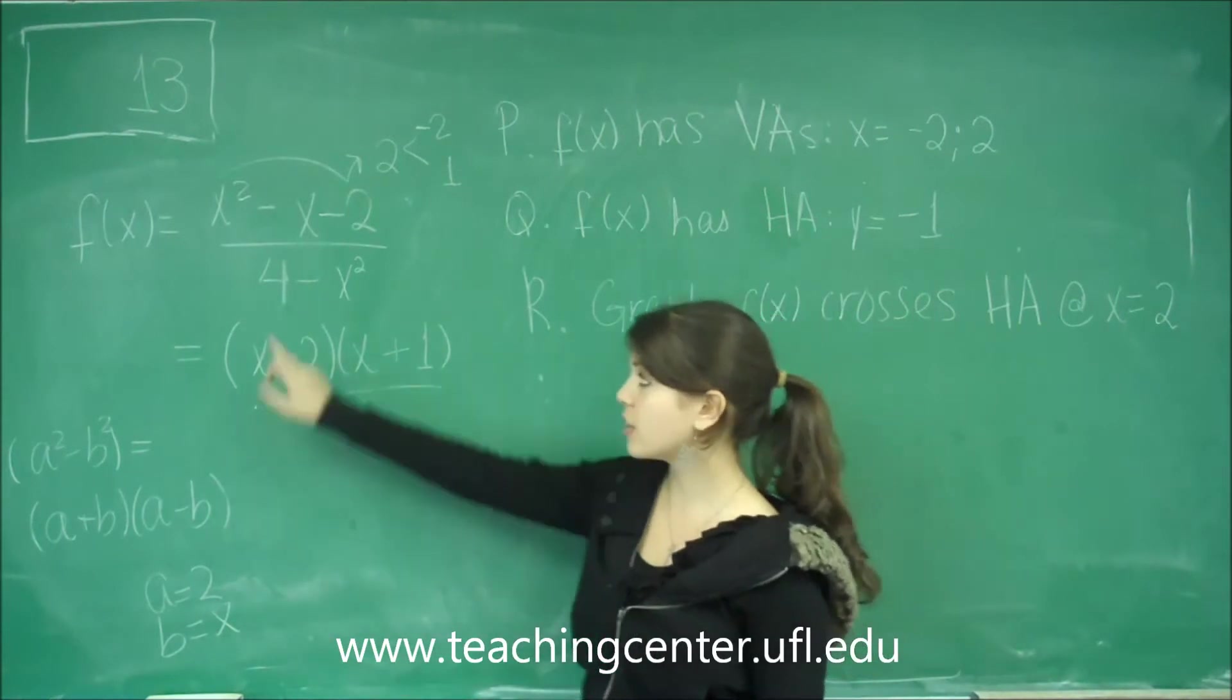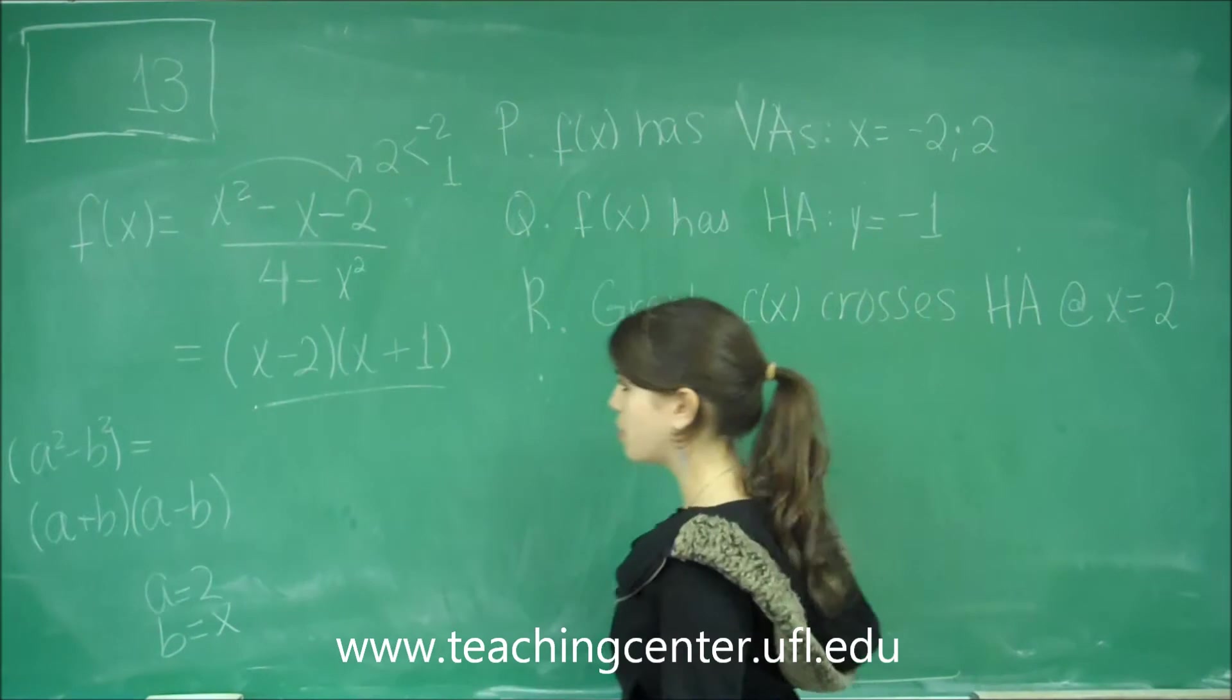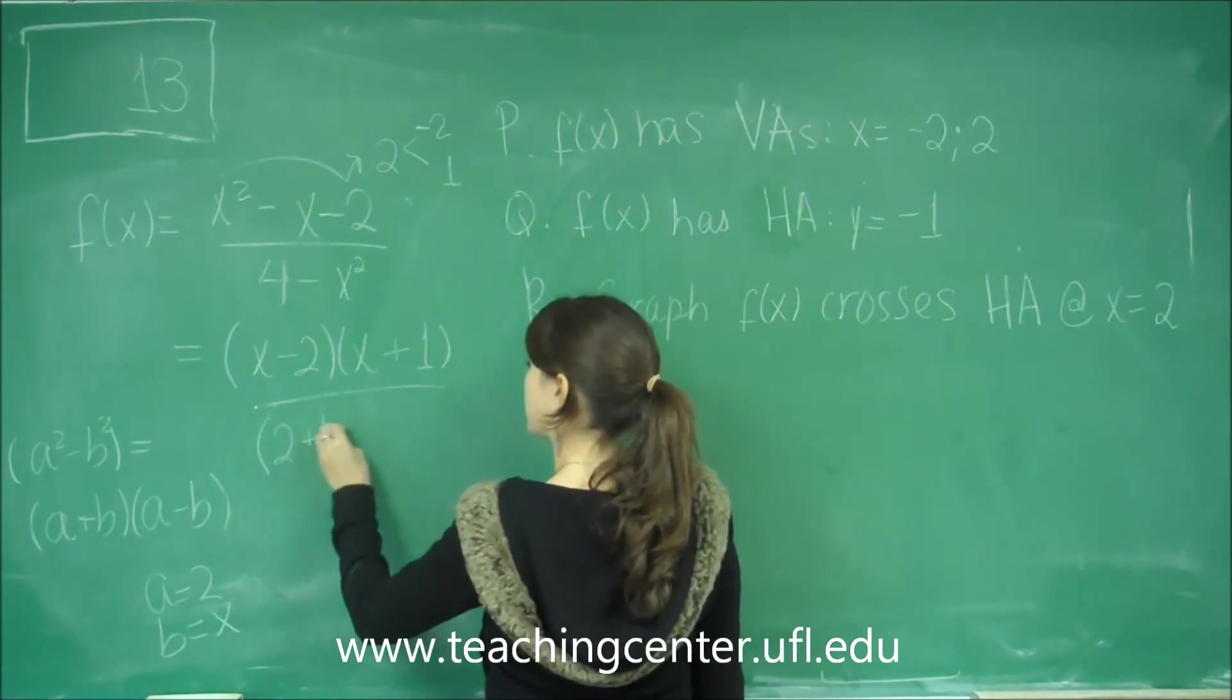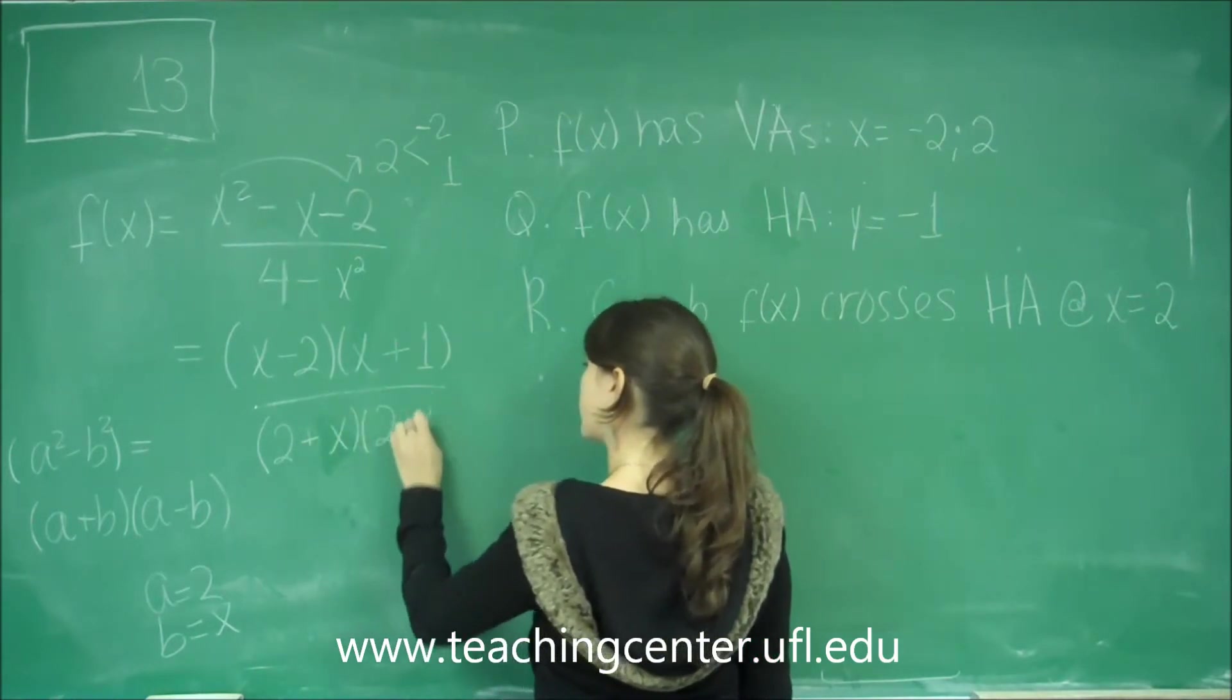Remember that a is not 4, but its square root, because 4 is a squared, so you've got to take the square root. So now when we convert that, we get 2 plus x, 2 minus x.